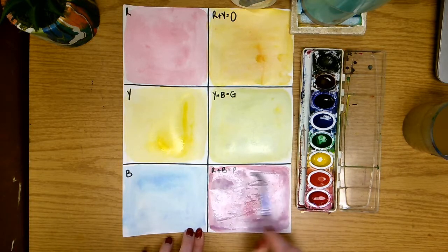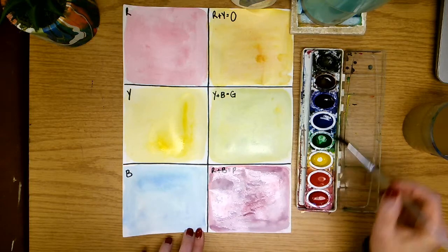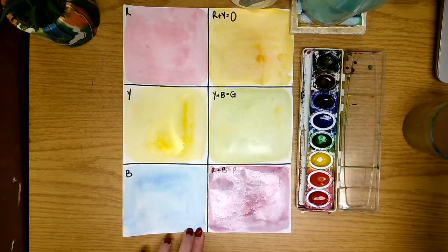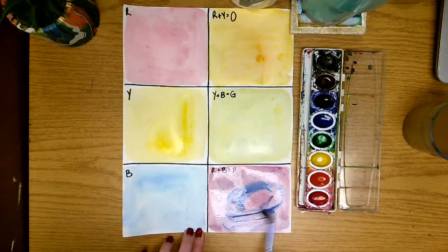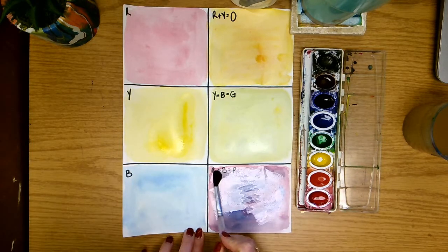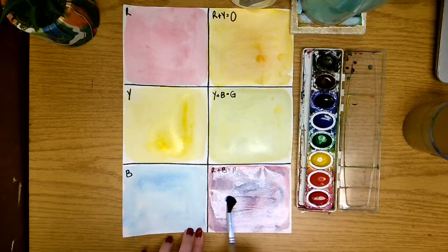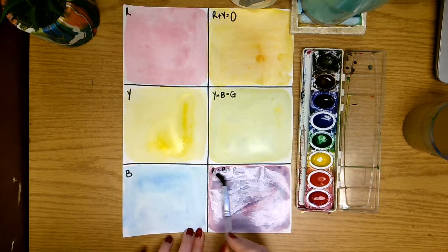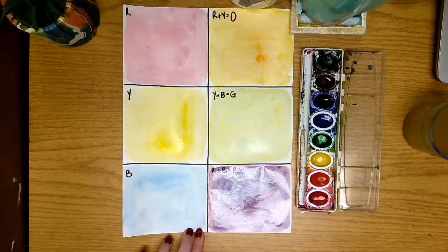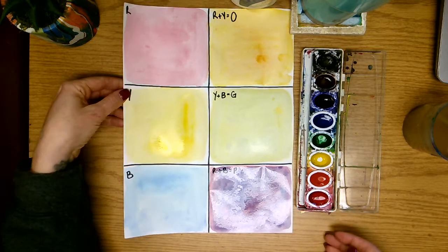Now we have a pretty nice purple happening here. Maybe I'll add just a little bit more blue. Ooh, that was a little bit much. So hopefully we'll cross our fingers that it doesn't turn too blue. And if it does, what will I do? I will add a little bit more red. That's actually a really nice purple, I think. So I'm going to stop right there.